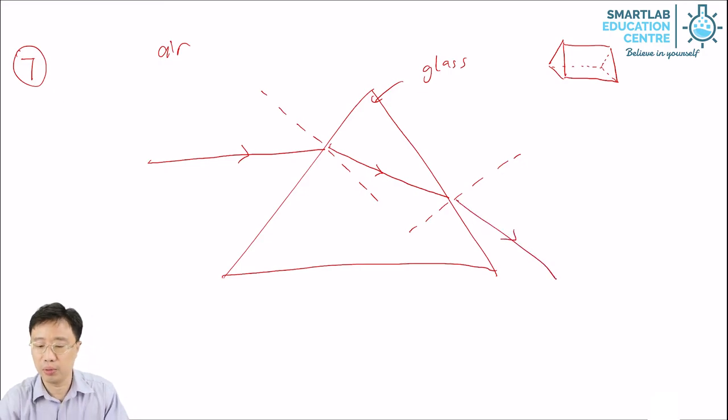So you draw it like this, bend away from normal. Note that this angle is bigger than this angle. This angle is smaller than this angle.